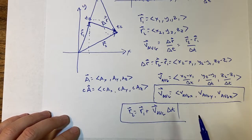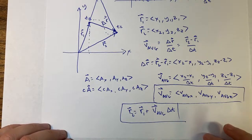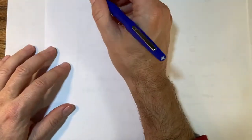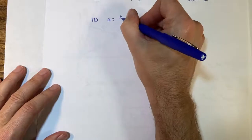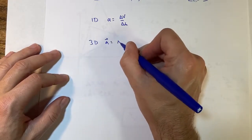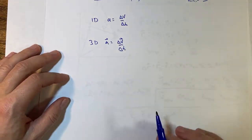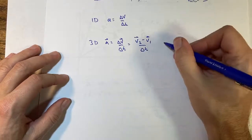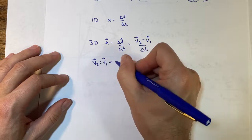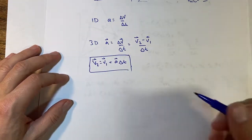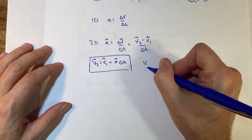I'll do a Python example, but not yet. Next is the definition of acceleration. In one dimension, a equals delta v over delta t. In 3D, we have: a vector equals delta v vector over delta t. That equals (v2 − v1) over delta t. Solving for v2 gives the velocity update formula in 3D: v2 equals v1 plus a·delta t.